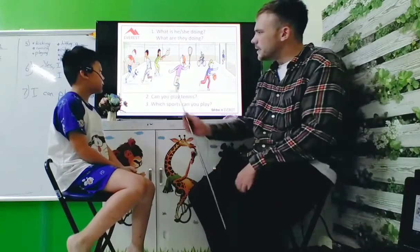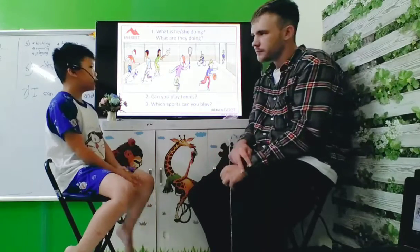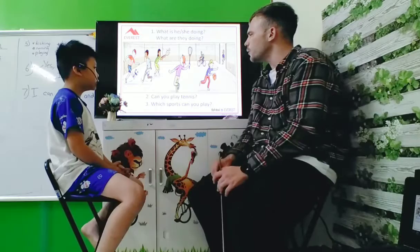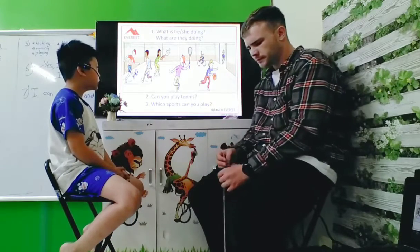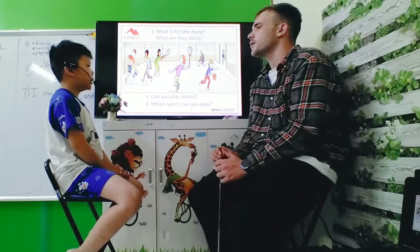Next one. What is he doing here? He is kicking. Kicking what? Kicking a ball. Kicking a ball. Good. What is he doing? He is riding the bike. Riding the bike.